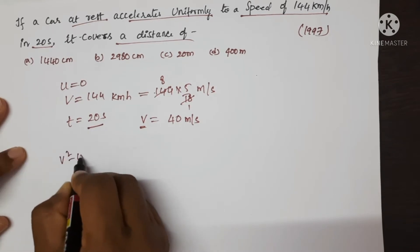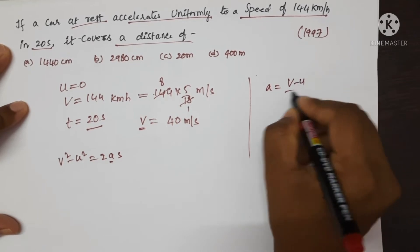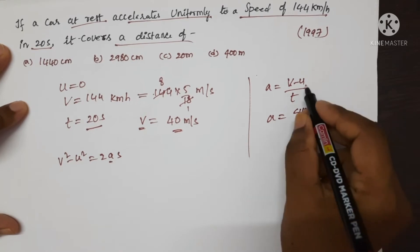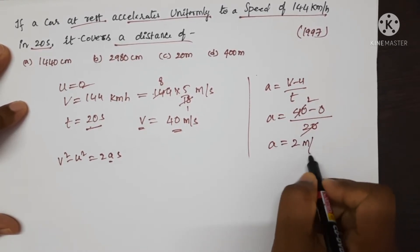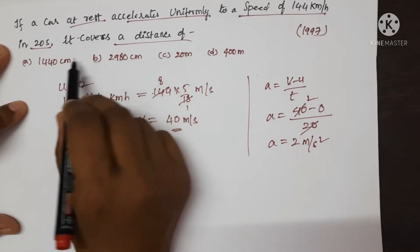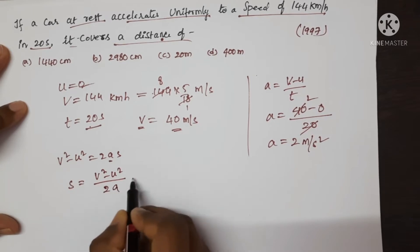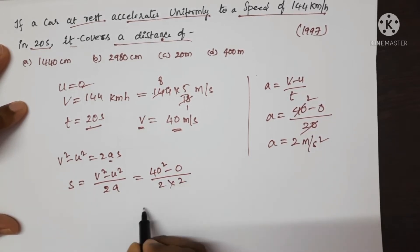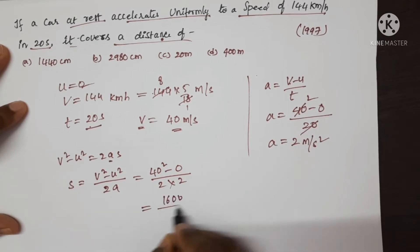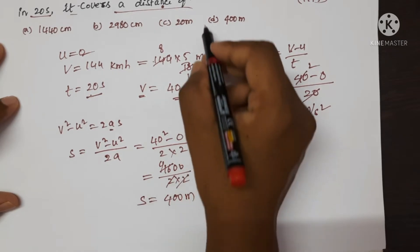Now substitute the values. Using V² − U² = 2AS, first find acceleration: A = (V − U) / T = (40 − 0) / 20 = 2 m/s². Now find distance: S = (V² − U²) / 2A = (40² − 0) / (2 × 2) = 1600 / 4 = 400 meters. So the value of S is 400 meters.